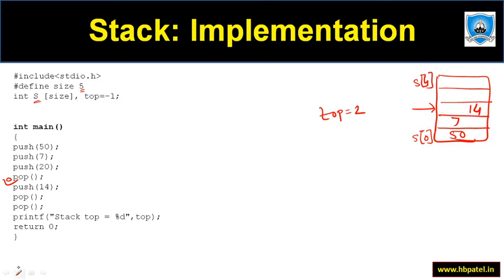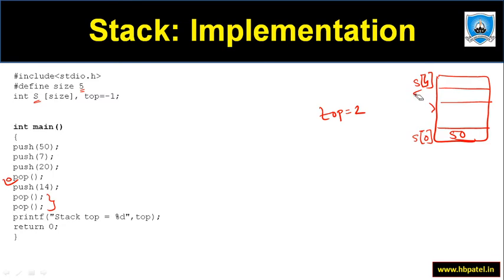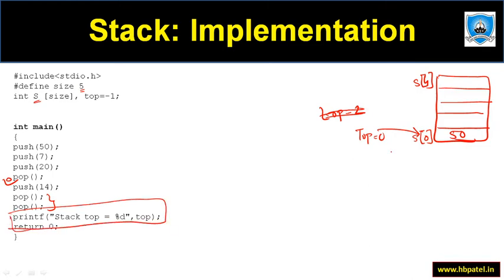After inserting 14, we now do two pops. The first pop removes 14, the second pop removes 7. Now only element 50 remains and top is pointing to index zero. So top equals zero, and if we print the value of top, zero will be printed. This is the final situation of the stack.